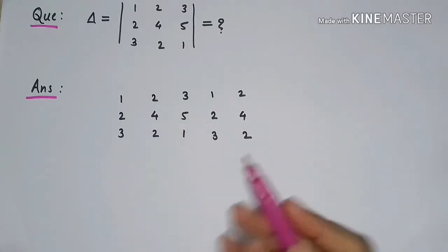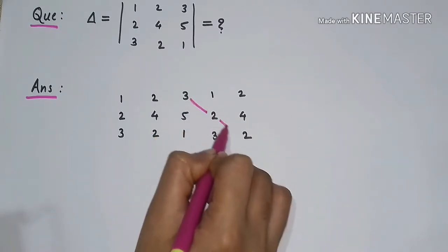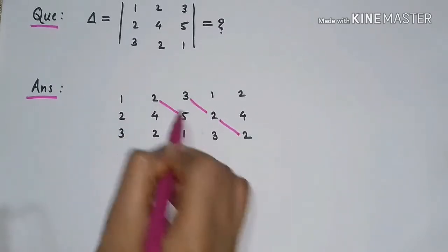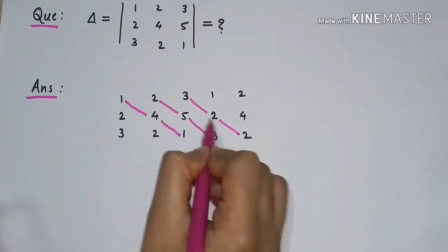Here this is the first right hand side diagonal, this is the second right hand side diagonal, and this is the third right hand side diagonal.